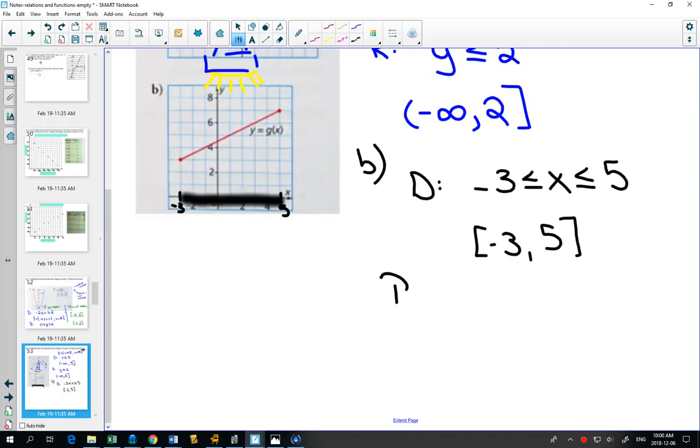For the second one, for our range, does it have a smallest y value? Yes. Right here is the smallest y ever gets is 3. Is there a biggest y value? Yes. Right here at 7. And so our range will be between 3 and 7. In interval notation, you would write it like this.